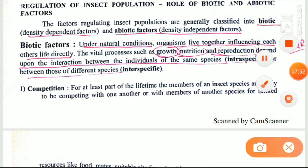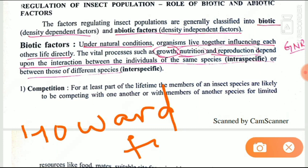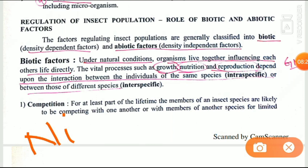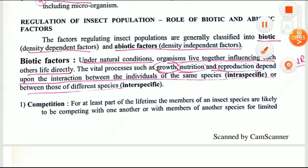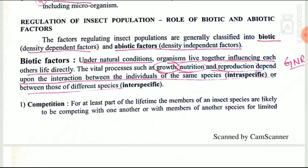These biotic and abiotic factors have been named differently by different scientists. Howard and Fiske called them catastrophic and facultative factors. Another scientist, Nicolcian, named them reactive and unreactive factors. Finally, Smith named them density dependent and density independent factors.